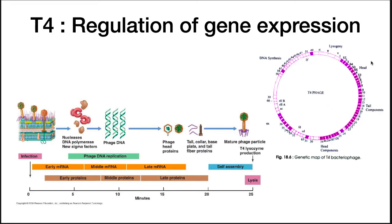Another example of a bacteriophage is T4. This virus is large and complex but can only perform a lytic cycle. However, many genes need to be synthesized, as you can see in the diagram. If they are all turned on at the same time, T4 would never be able to replicate.